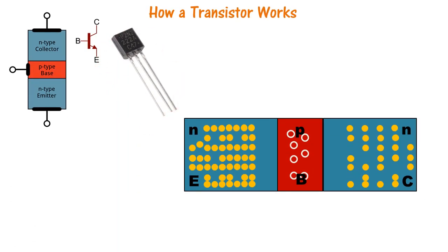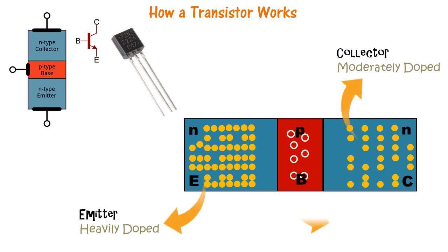This is a very standard NPN type transistor and it consists of three layers: the emitter which is heavily doped, the collector which is moderately doped, and the base which is very thin and very lightly doped.